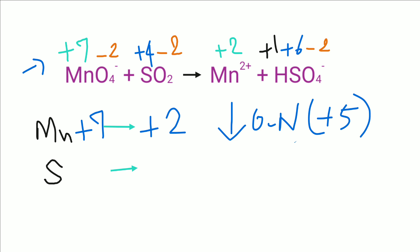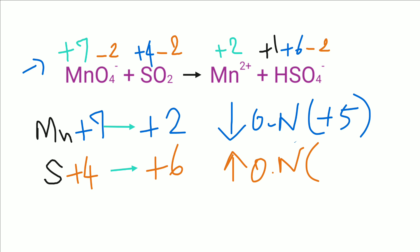Similarly, for sulfur: the oxidation number of sulfur changes from plus 4 to plus 6, so the sulfur oxidation number increases — that is, oxidation. The increase in oxidation number is plus 2. So the increase is plus 2 and the decrease is plus 5.